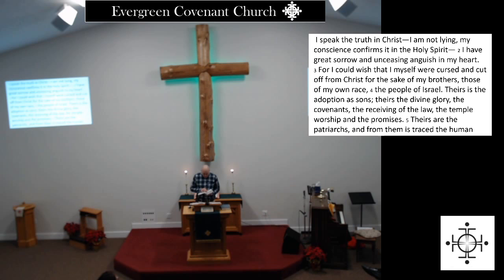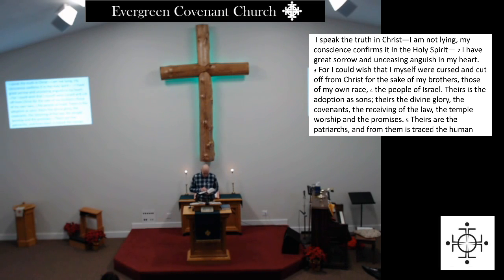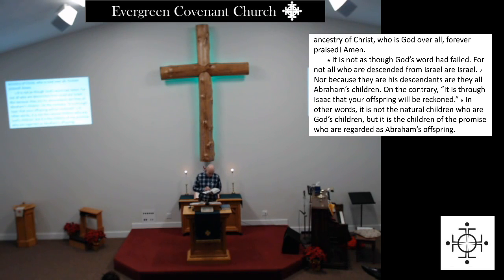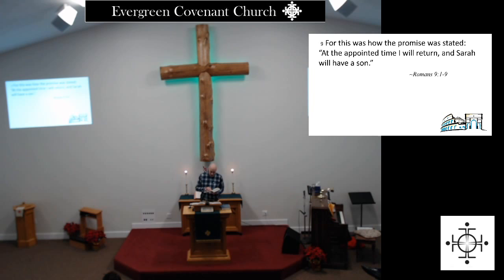Let's begin by reading Romans 9, verses 1 through 9. It says: 'It is not as though God's word had failed. For not all who are descended from Israel are Israel. Nor because they are his descendants are they all Abraham's children. On the contrary, it is through Isaac that your offspring will be reckoned. In other words, it is not the natural children who are God's children, but it is the children of the promise who are regarded as Abraham's offspring. For this was how the promise was stated: at the appointed time I will return and Sarah will have a son.' Let's stop there for the moment.